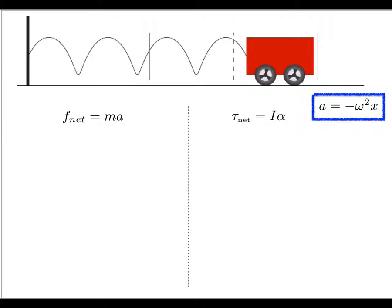Before we write down equations, let's think about what the positive x direction is going to be. I'll pick rightward as positive x. In that case, the spring force acting on the cart is going to be negative kx. In the position shown, the cart is to the right of the equilibrium line, so the spring force has to be to the left. Since the position is positive, writing negative kx gives us a force to the left.